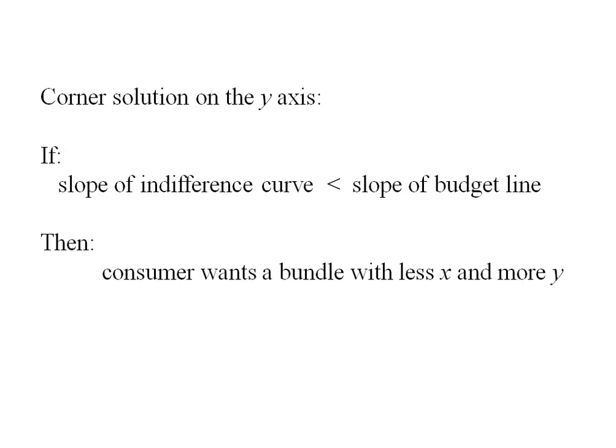Now the reverse is true for the Y axis. If the slope of the indifference curve is flatter than the slope of the budget line, this consumer wants a bundle with less X and more Y. That is they're going to keep spending more and more income on Y until they exhaust their income and spend nothing on X. We're going to have a corner solution on the Y axis.